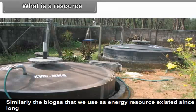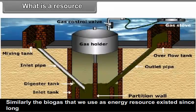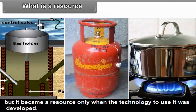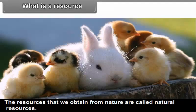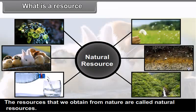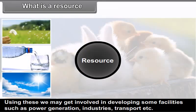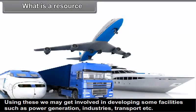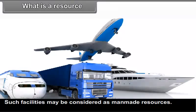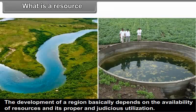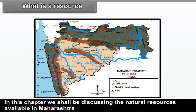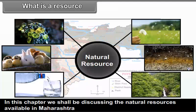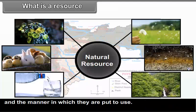They became resources only after the appropriate technology was developed. Similarly, the biogas that we use as an energy resource existed since long but it became a resource only when the technology to use it was developed. The resources that we obtain from nature are called natural resources. Using these, we may get involved in developing some facilities such as power generation, industries, transport, etc. Such facilities may be considered as man-made resources. The development of a region basically depends on the availability of resources and its proper and judicious utilization. In this chapter, we shall be discussing the natural resources available in Maharashtra and the manner in which they are put to use.